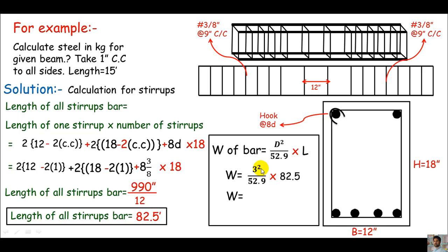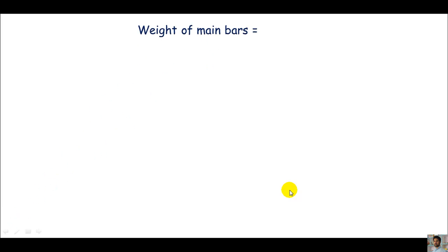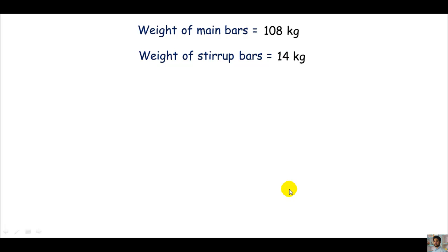That gives 0.17 times the length of the bar, which equals 14 kg. That is the weight of all 18 shear reinforcement stirrups in kg. So our second approach — stirrup weight — is 14 kg. Our first approach was weight of main bars at 108 kg, and the second approach was stirrup weight at 14 kg. We have done both. This was a simple beam with no bent-up bars.